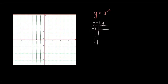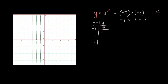When x is equal to negative 2, y equals negative 2 squared, so that's negative 2 times negative 2, which is positive 4. When x is negative 1, we have negative 1 times negative 1, so the answer is 1. When x is 0, y is 0 times 0, which is 0. When x is 1, 1 times 1 is 1. When x is 2, 2 times 2 is 4.